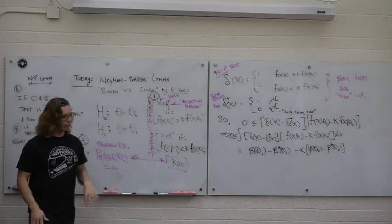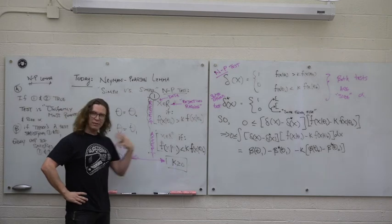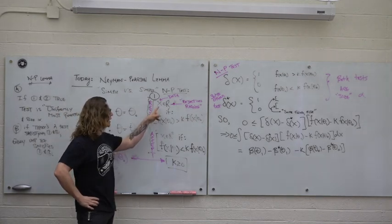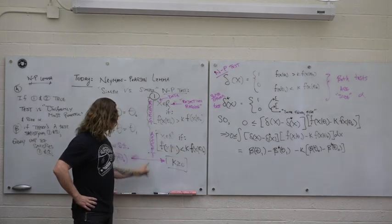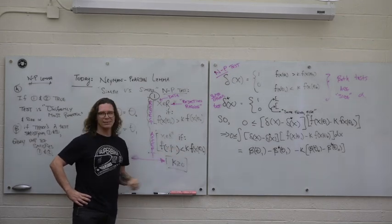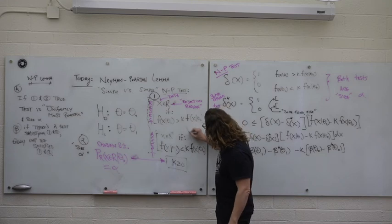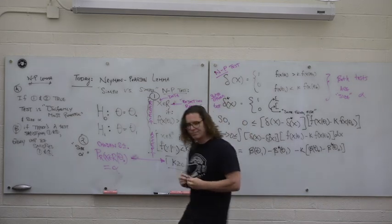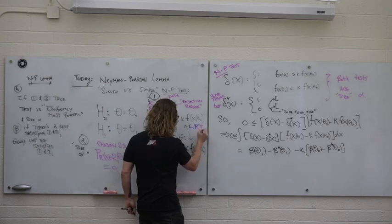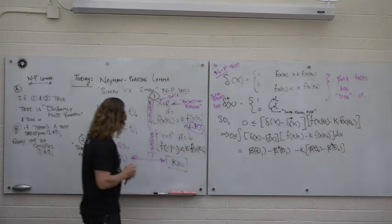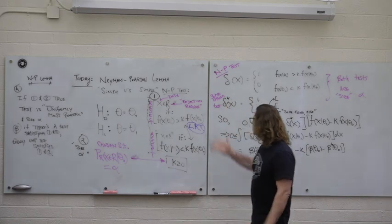In the simple versus simple hypothesis, we're just comparing two data points to each other. The Neyman-Pearson test says x is in the rejection region — the summary statistic, the minimal sufficient statistic, or the high-dimensional data lives in some rejection region defined by this condition. I'll point out that this condition is really the likelihood ratio test statistic. So this is really the likelihood ratio test in disguise.